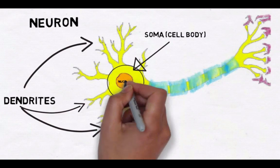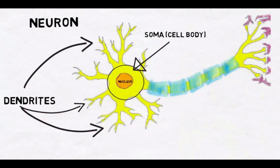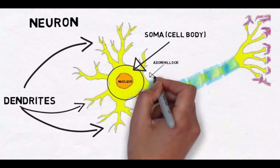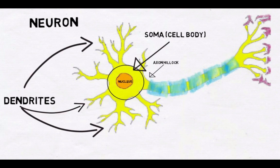The soma contains the nucleus, which contains the DNA or genetic material of the cell. The soma takes all the information from the dendrites and puts it together in an area called the axon hillock. If the signal coming from the dendrites is strong enough, then a signal is sent to the next part of the neuron, which is called the axon.